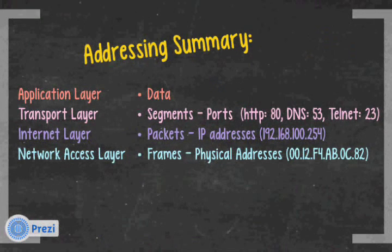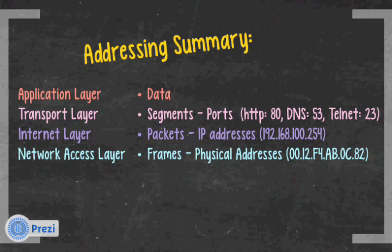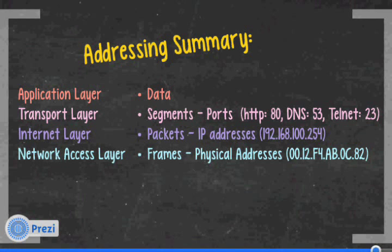Addressing summary: the application layer has data but no addressing per se — it might have a file name, which would serve as the addressing. The transport layer uses ports — for example, HTTP port 80, port 53 for DNS, port 23 for Telnet. The internet layer uses IP addresses, such as 192.168.100.254. The network access layer uses physical addresses, such as 00:12:f4:ab:0c:82, using hexadecimal and 48 bits.